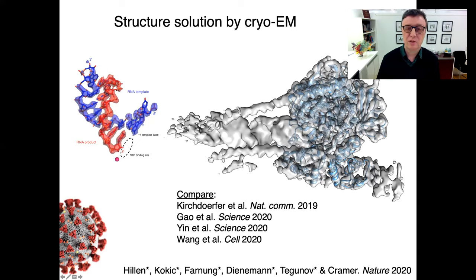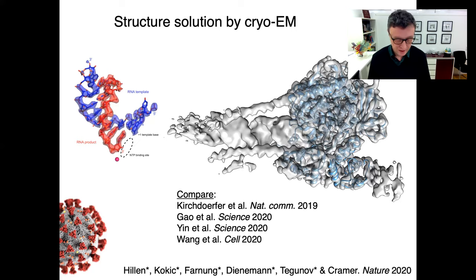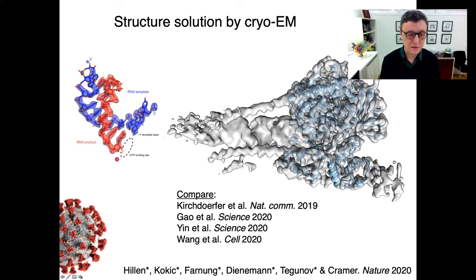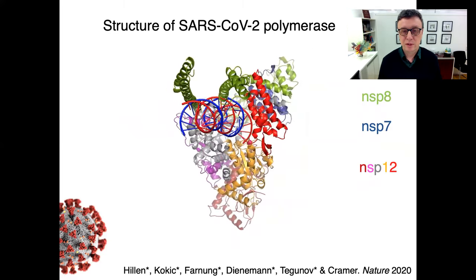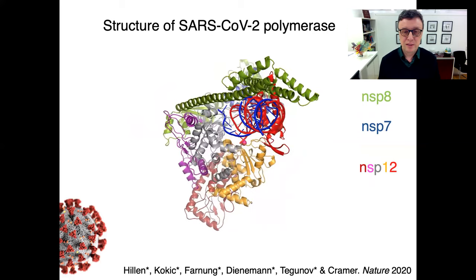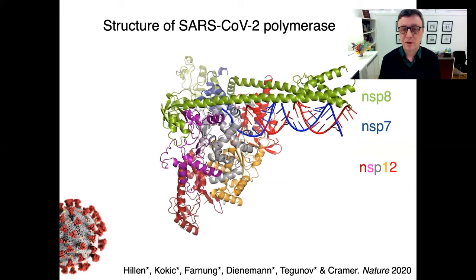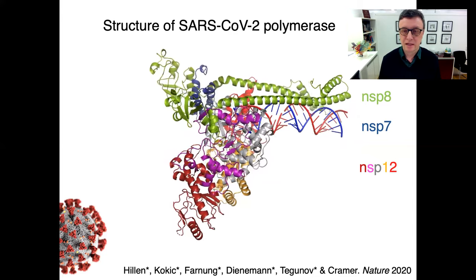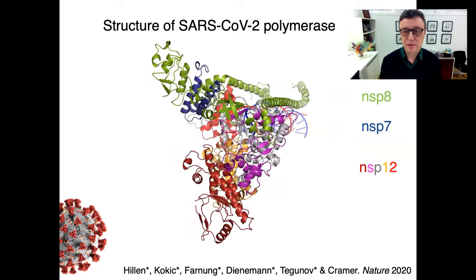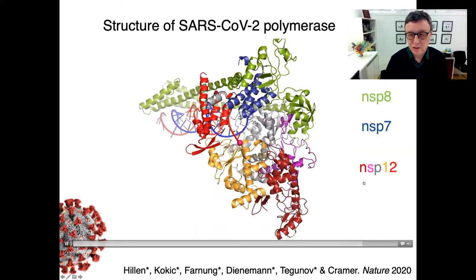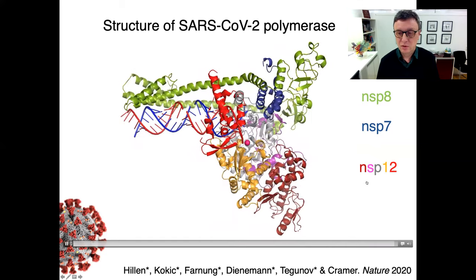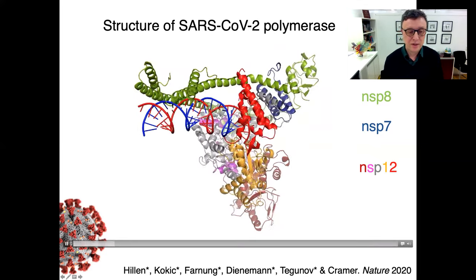But when you move to the periphery of the structure, for example these regions out here, you can see that the resolution is lower; there's mobility in the protein and in the nucleic acids, so there's less detail to be observed. Here is an overview of the coronavirus polymerase structure with its different protein subunits as well as the RNA template-product duplex bound to its active center. In green you see two copies of the NSP8 subunit, in blue we have the NSP7 subunit, and the large subunit called NSP12 is shown in different colors that symbolize its different domains.